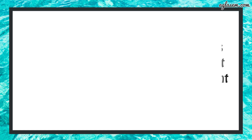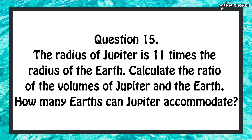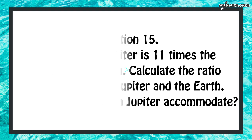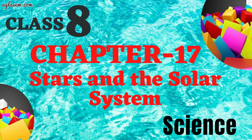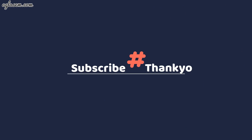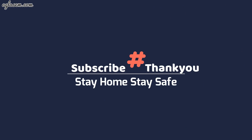Question number 15: the radius of Jupiter is 11 times the radius of the earth. Calculate the ratio of the volumes of Jupiter and the earth. How many earths can Jupiter accommodate? You can do it yourself. I have completed all the questions of this chapter. I hope you like this video. If you have any query or doubt, please put it in the comment section below. For more NCERT solutions, keep watching and do not forget to subscribe to our channel Agla Same Schools. Do not forget to wear a mask and take good care of your health.